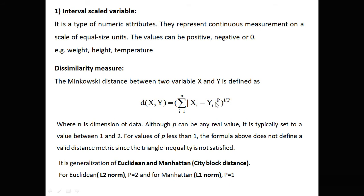When p is equal to 1, it becomes Manhattan distance, also called city block distance, L1 norm, or simple absolute distance — four names in total. When p is equal to 2, it becomes Euclidean distance, or L2 norm.